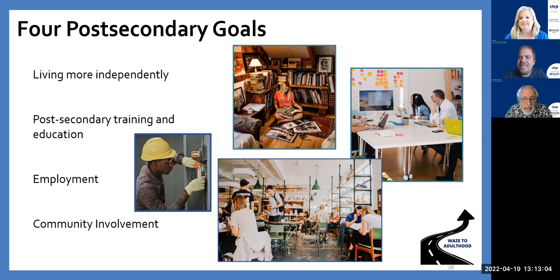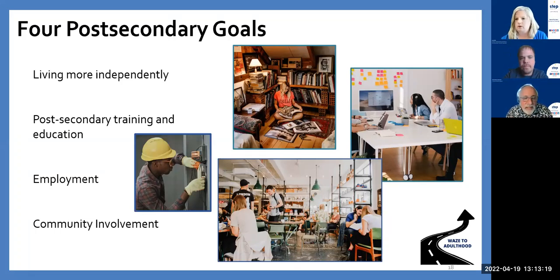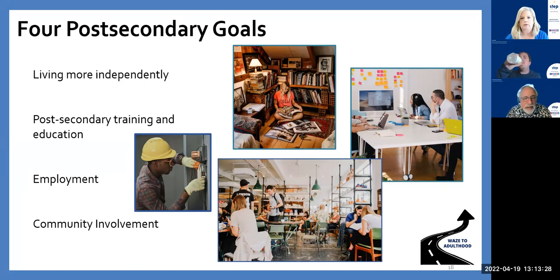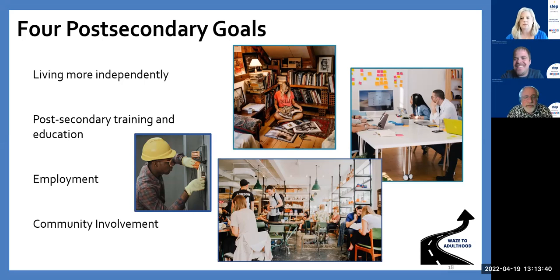If you missed anything about the Support Star, my contact information is at the end of this training — I'm happy to have a conversation with you about it. I've used that one-on-one with families and students many times and it's very successful. Now a review of the post-secondary goals: the four areas we're talking about are living more independently — some students are not going to want to live with their parents for the rest of their lives, and some parents are not going to want their youth to live with them — post-secondary training and education, employment, and community involvement or engagement.